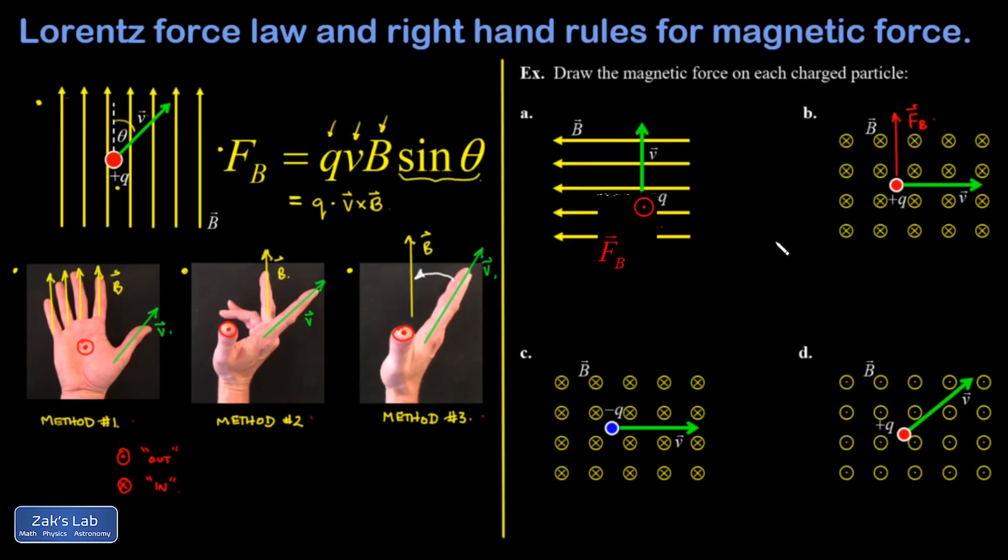C is exactly the same as B, except I switched it to a negative charge. So remember the rule is if the charge is negative, you just get the opposite result from the magnetic force.